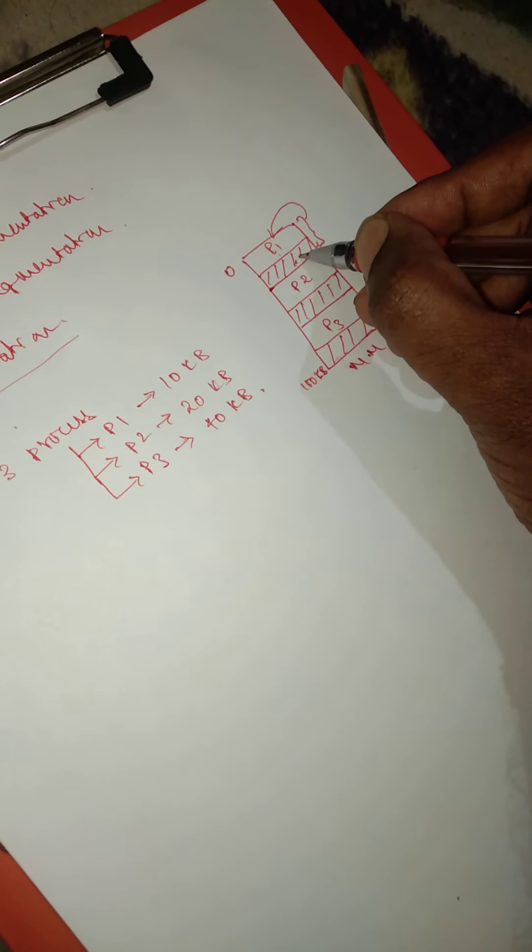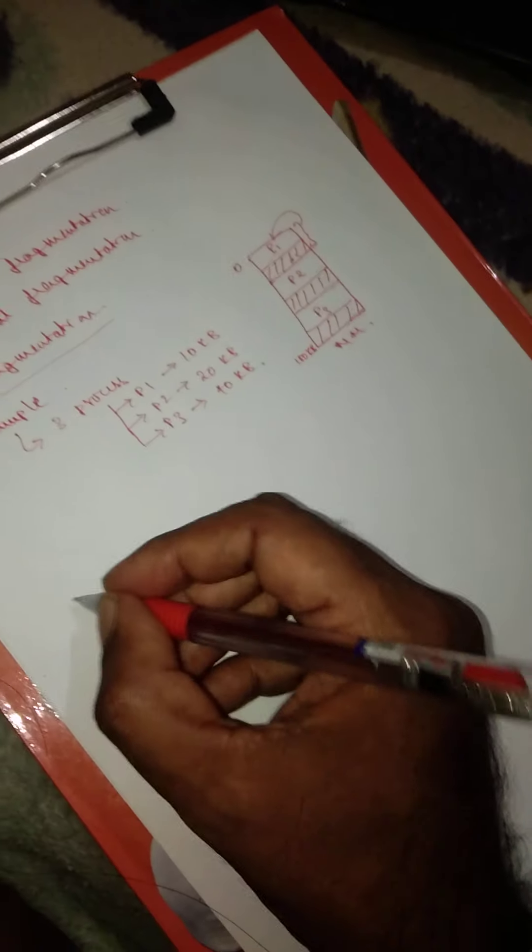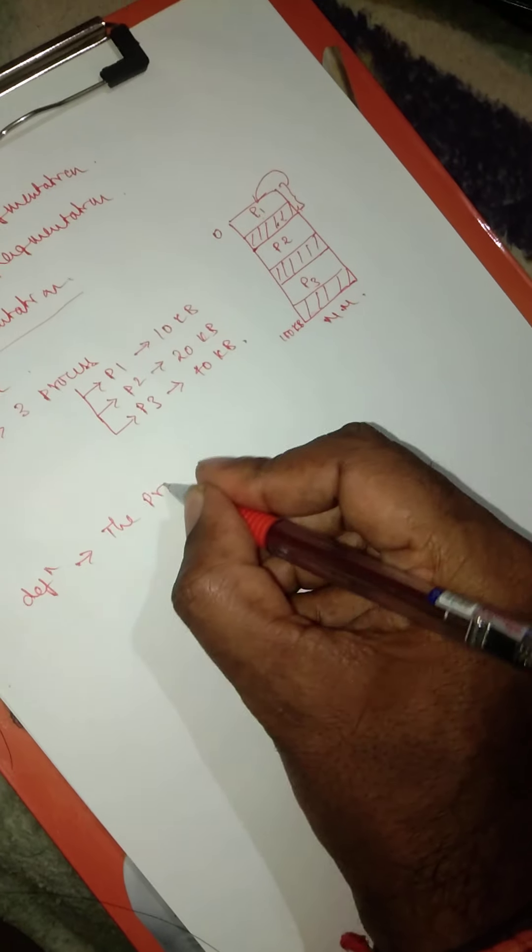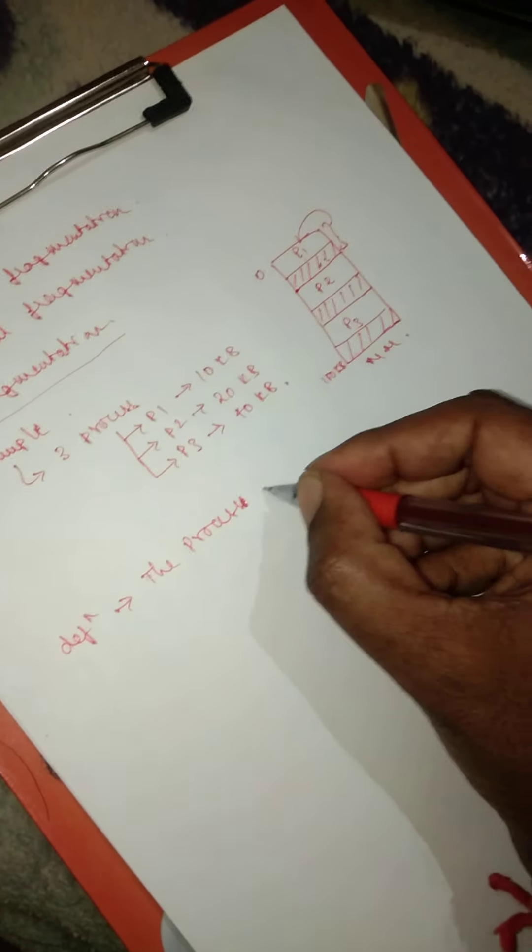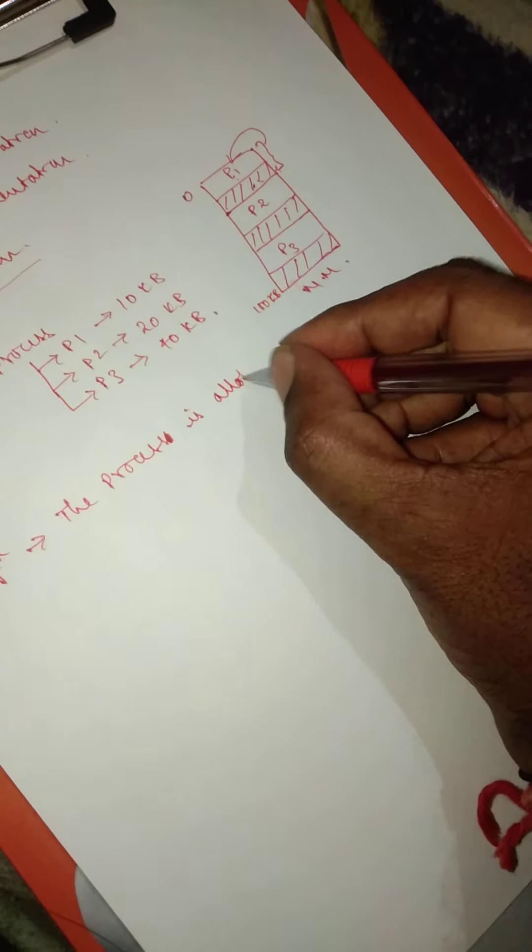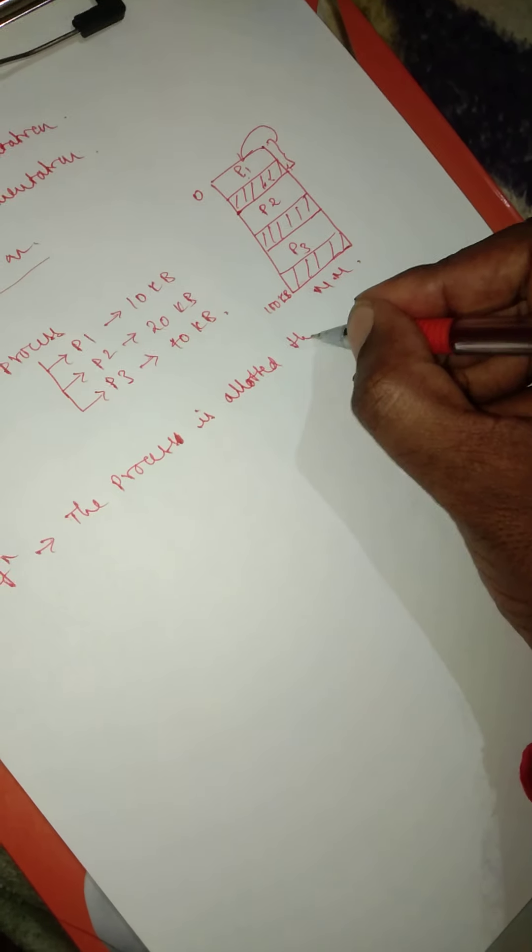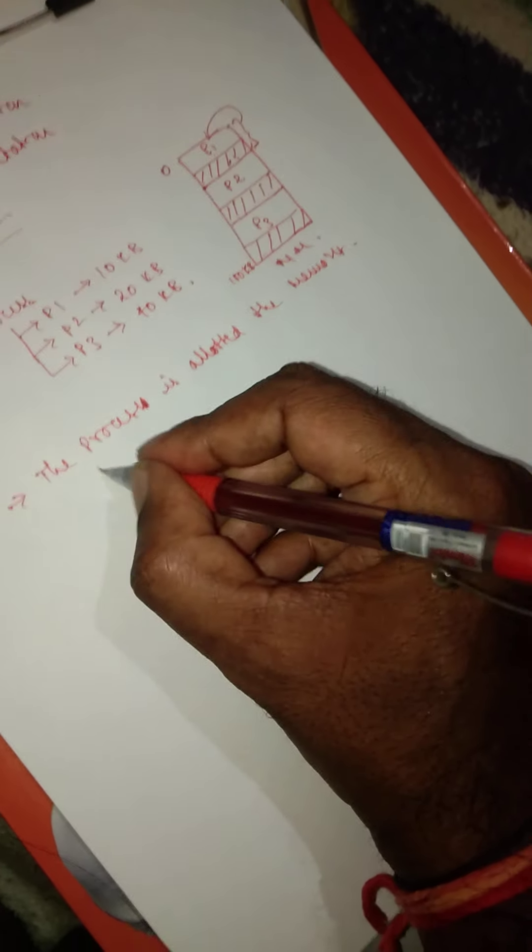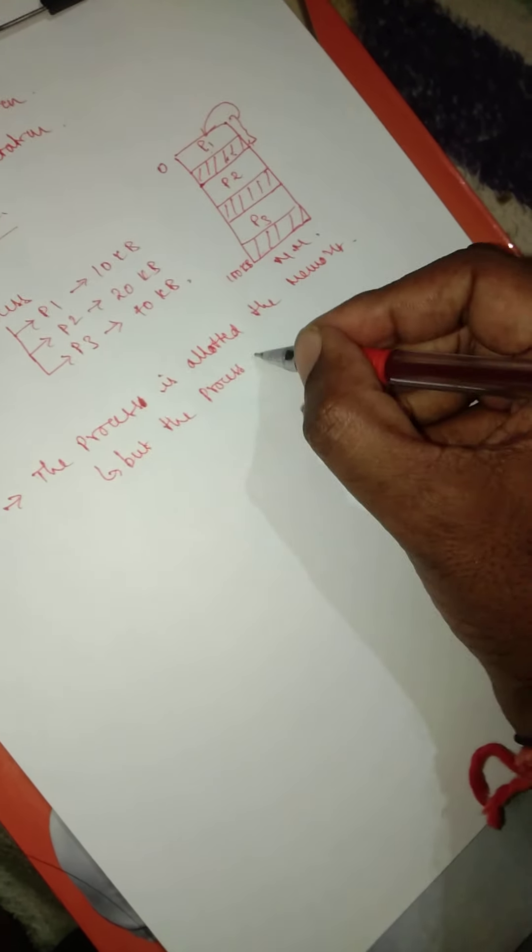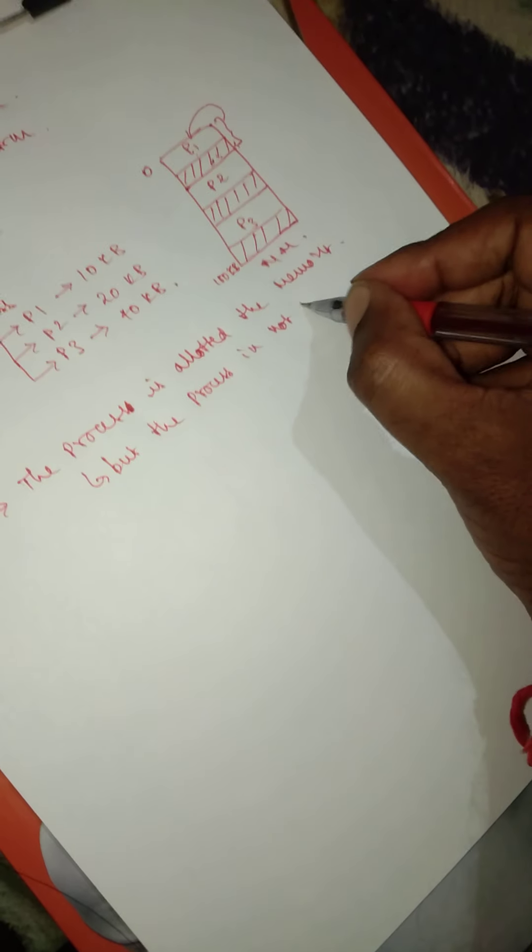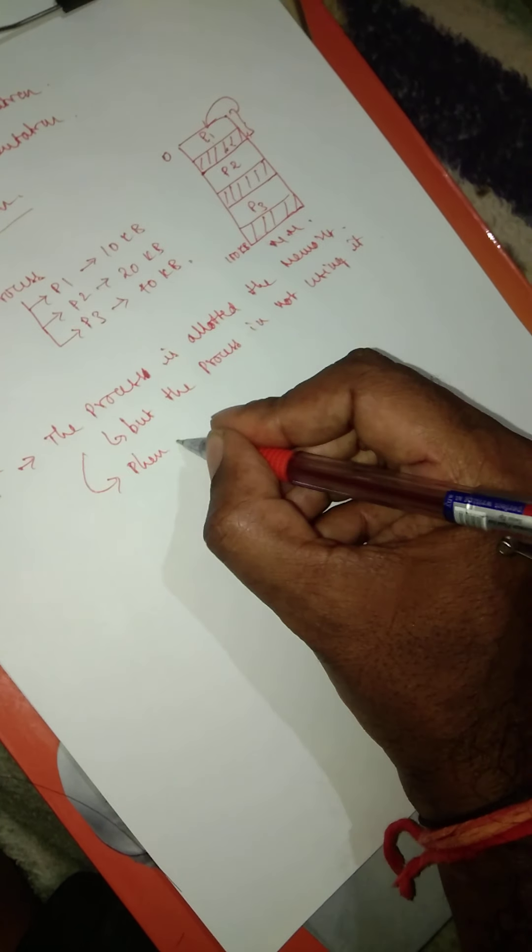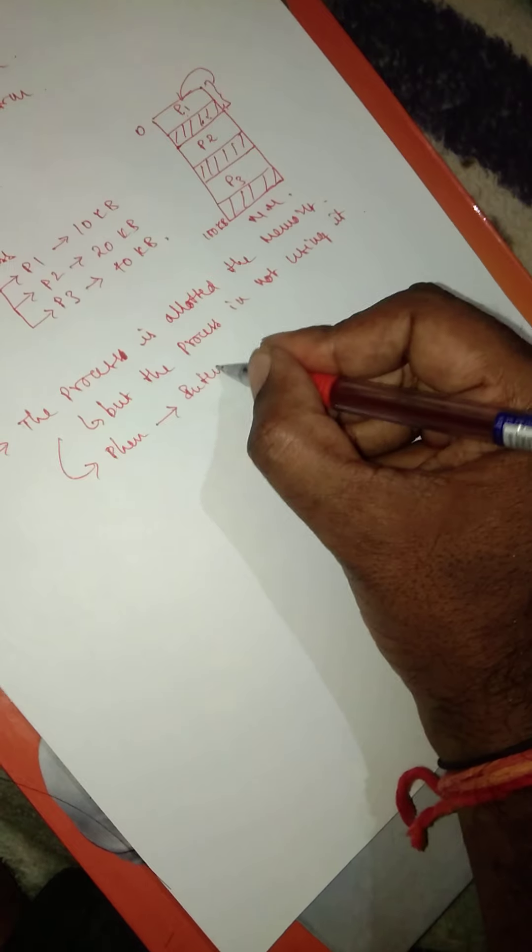This process or phenomena we call internal fragmentation. So how do you define this? The process is allotted the memory, but the process is not using it. This phenomena is called internal fragmentation.